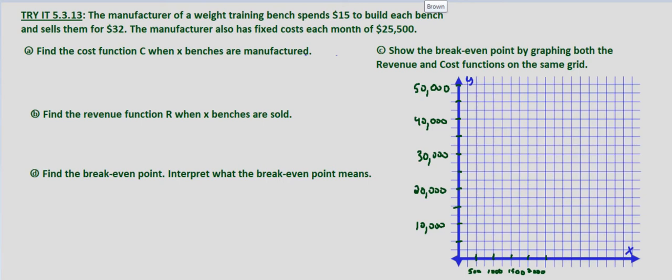There's a lot going on in this problem so I tried to spread it out as much as possible and leave room for everything. We're first asked to find the cost function C when X benches are manufactured. We're told that the manufacturer spends $15 to build each bench and sells them for $32 each and that the fixed costs each month are $25,500. So C of X equals cost per bench times the number of benches manufactured plus fixed costs.